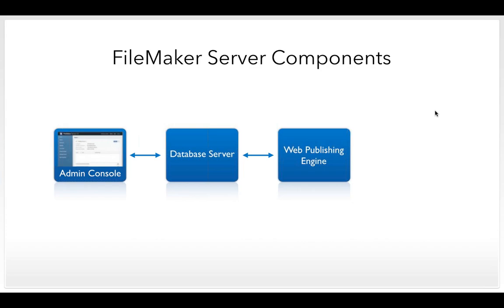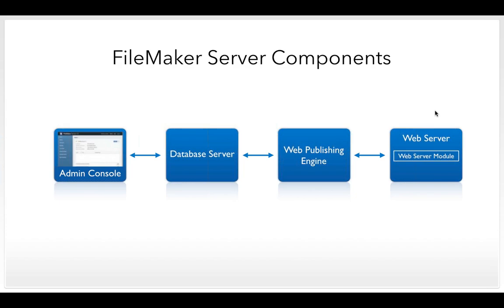There's also a web publishing engine component. When we deploy solutions to the web, the web publishing engine converts the information in our solution files into a format that web browsers can interpret. A web server delivers that content to the browser, communicating with the web publishing engine through a piece of software called the web server module. If we use custom web publishing with PHP, the PHP engine is also required to interpret PHP code in order to deploy our solution.